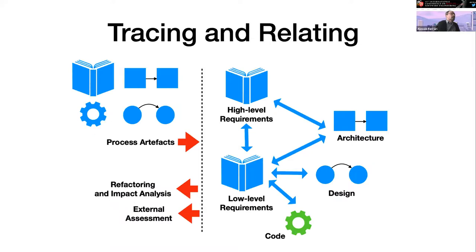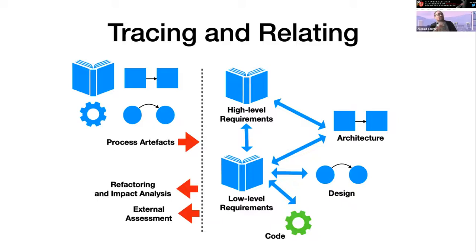Tracing and relating is another task strictly related to retrieval. The software process is not just made of requirements — we have models, code, and other artifacts, and all these artifacts are traced to each other. This is another NLP4RE task — we had a distinguished paper award this year on tracing. The issue is finding relationships between requirements and architecture models, design models, actual code, or requirements at different degrees of abstraction.